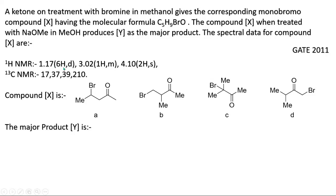From the ¹H NMR: δ 1.17, 6H doublet. These six hydrogens come from two methyl groups in a symmetrical environment. Looking at options: if the two methyls are in different environments, we would get a 3H doublet and a 3H singlet separately — those options are eliminated. Another option gives a 3H doublet and a 3H singlet — also not matching. Only one option gives a 6H doublet, which is correct. Additionally, a 1H multiplet is required, and in one option this 1H is missing — eliminating that option too.